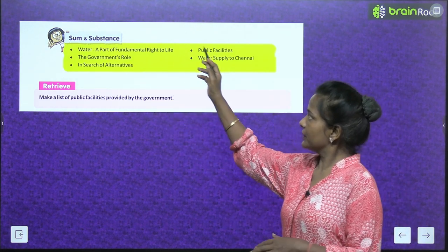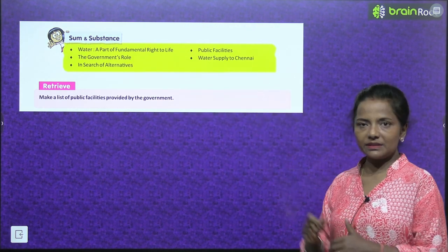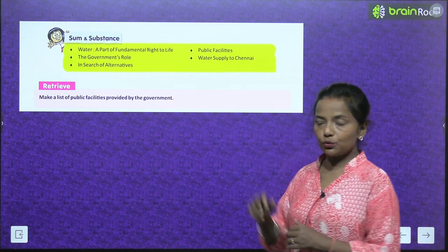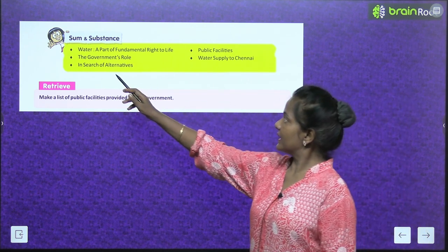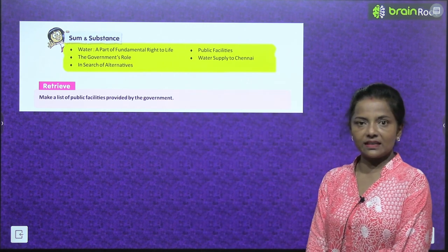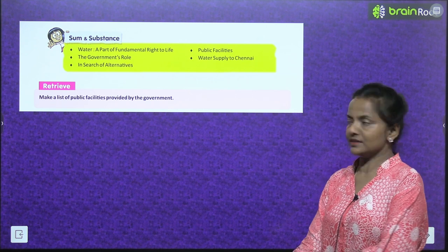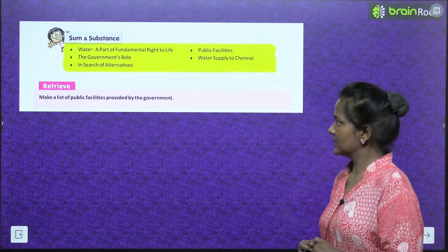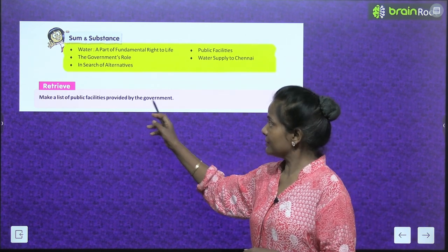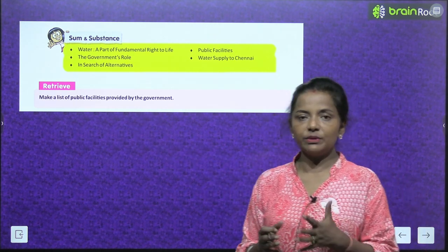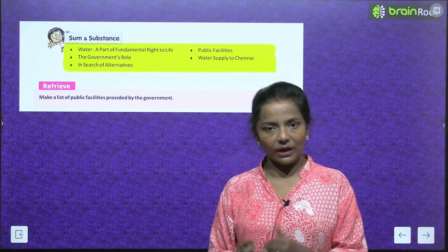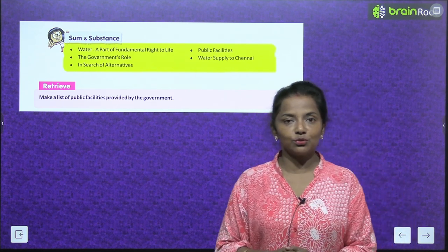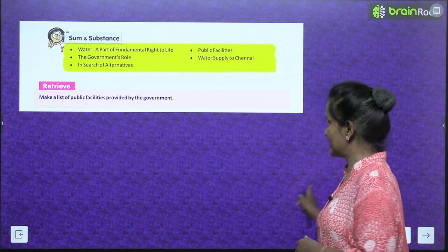Water — a part of the fundamental right to life. This is the sum and substance of the topics we are going to read in this chapter. We will read about water, then public facilities, the government's role — Sarkar ka kya yogdaan hai, kya role hai isme. Water supply to Chennai, in search of alternatives. Also, make a list of public facilities provided by the government. Let's read the chapter and find out.